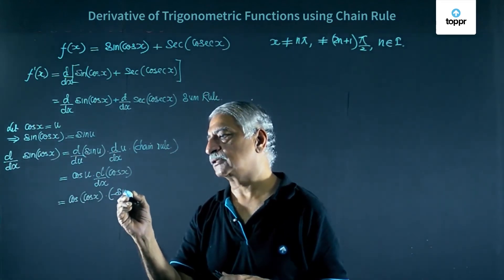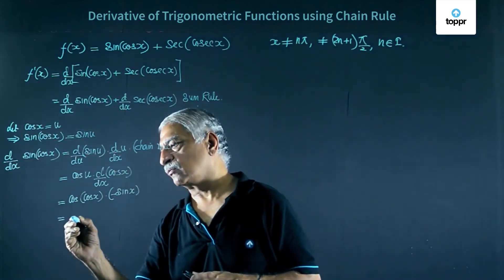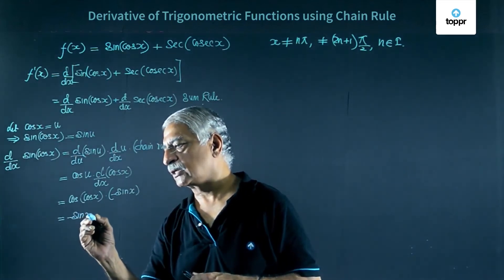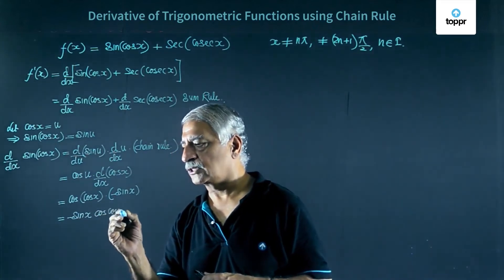So this is cos x. This gives me cosine of u is cos x into derivative of cos x is minus sin x. So this is equal to minus sin x cosine of cos x.